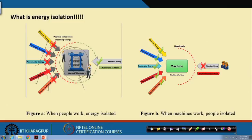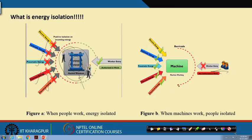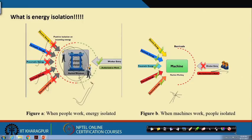The other scenario: machines and processes have to work — otherwise how will the output come? So when machines and processes are working, people should not enter. If people enter while machines are working, they will be trapped in the energy and killed. The second case is simple — put barricades so people will not go. We are focusing on the first scenario: when people are going to work on machines, how do you make energies positively zero? That is called energy isolation, or positive energy isolation.